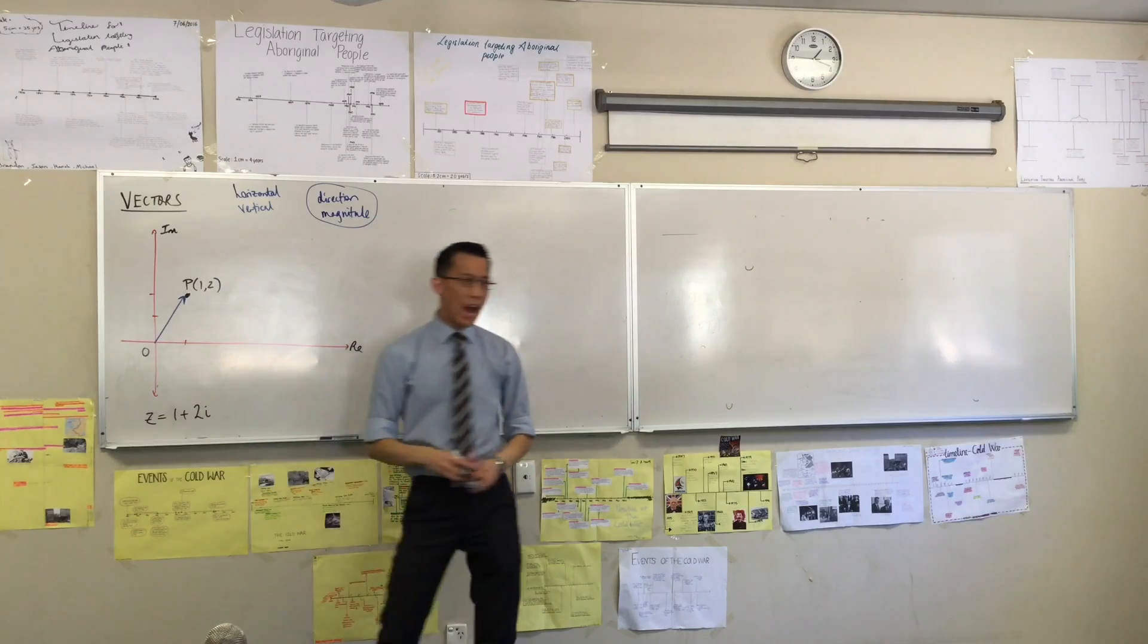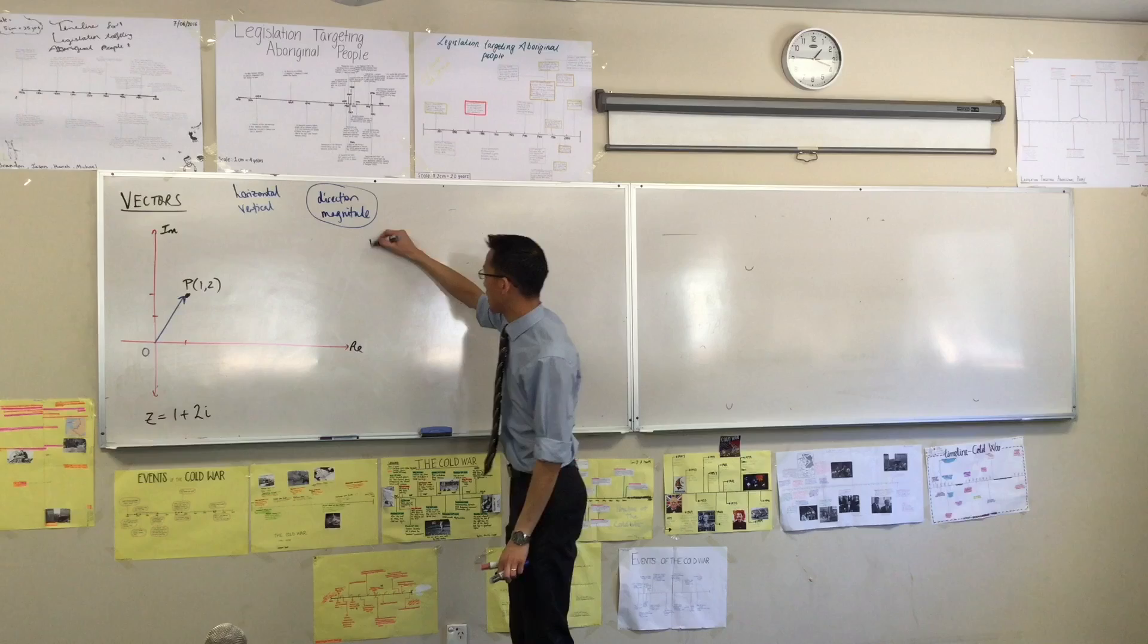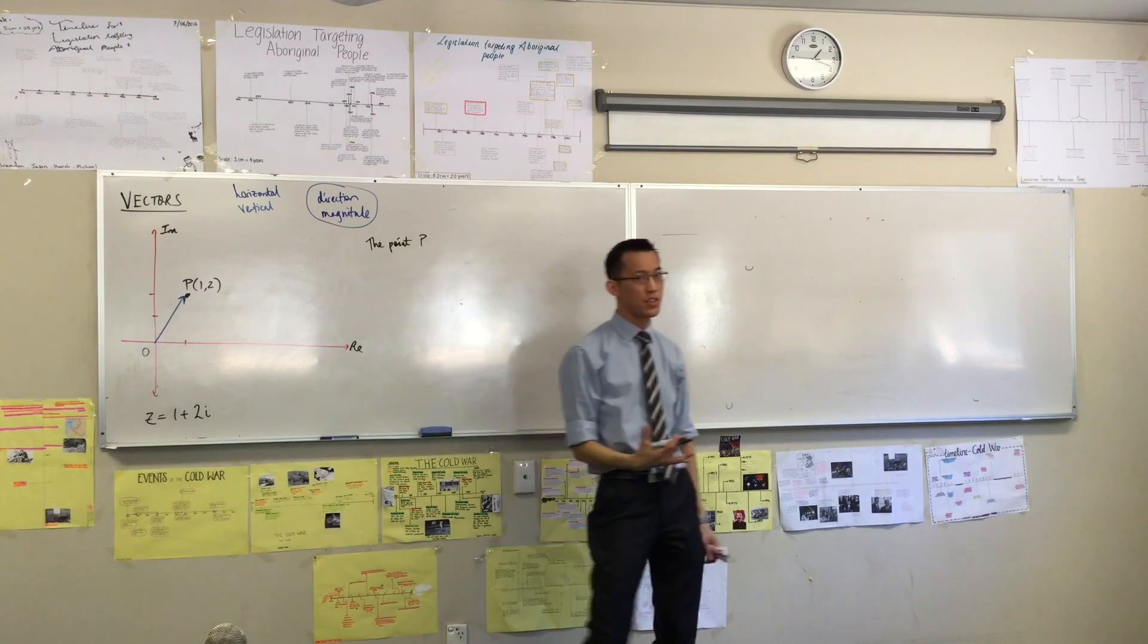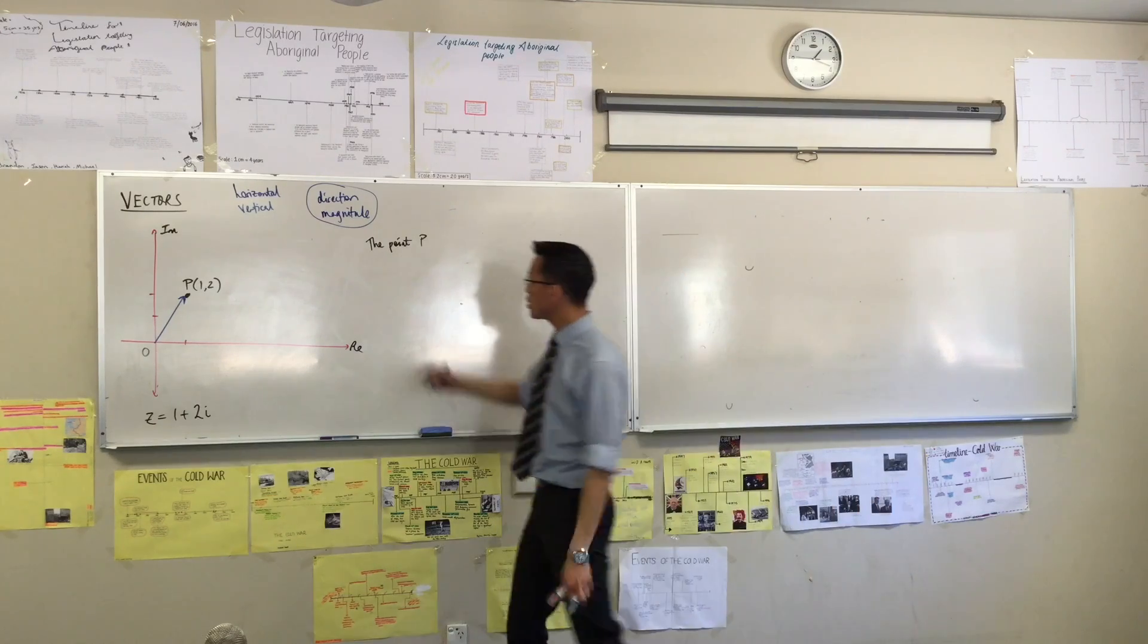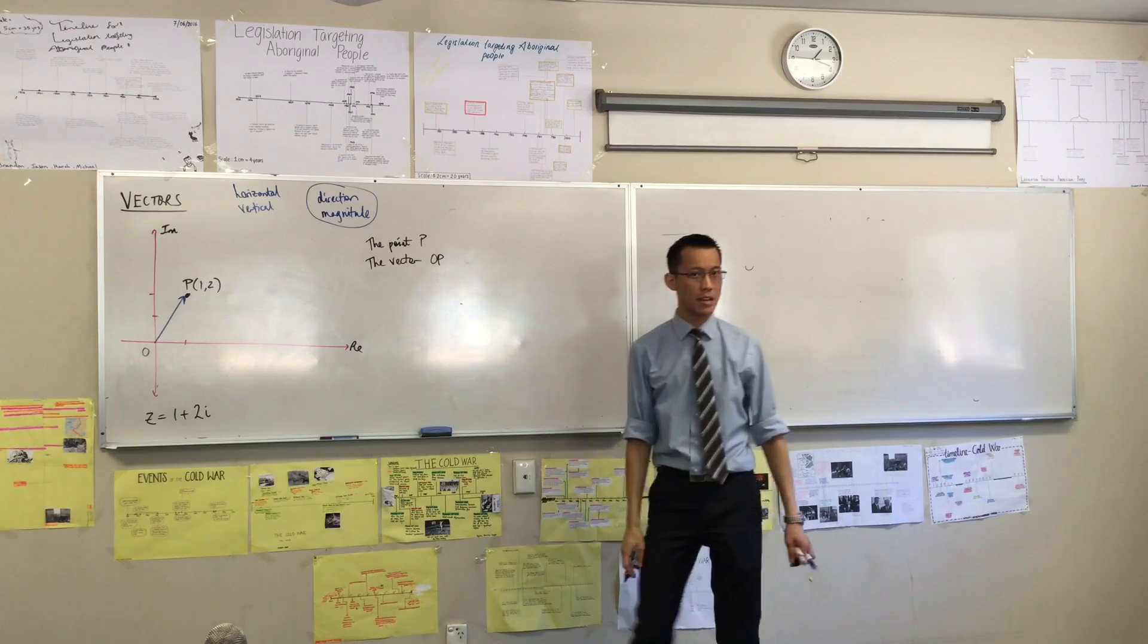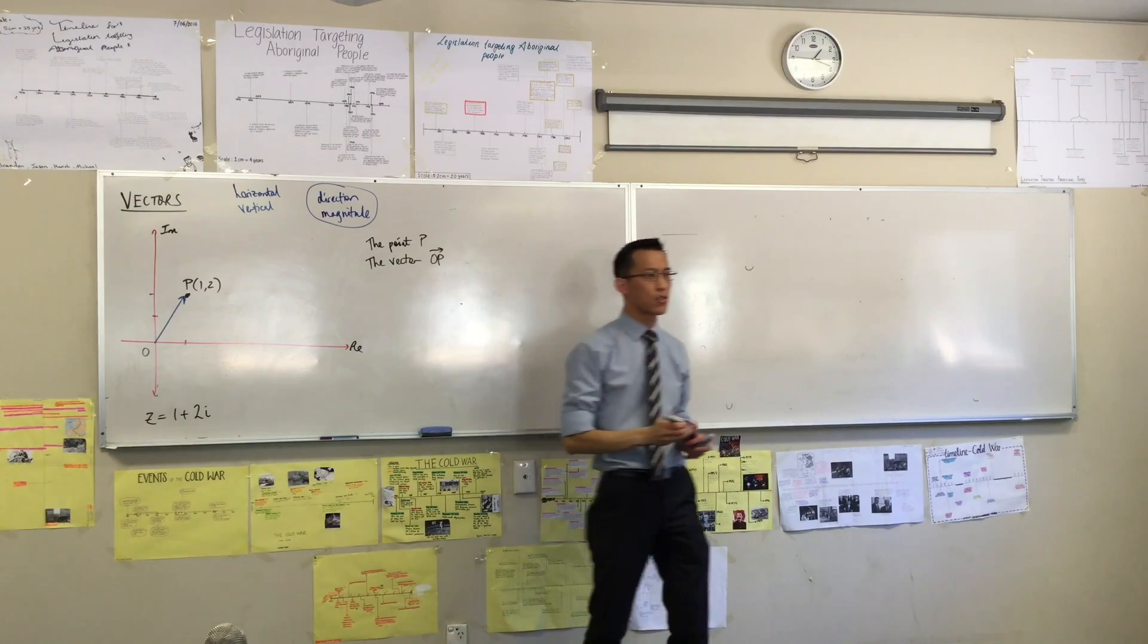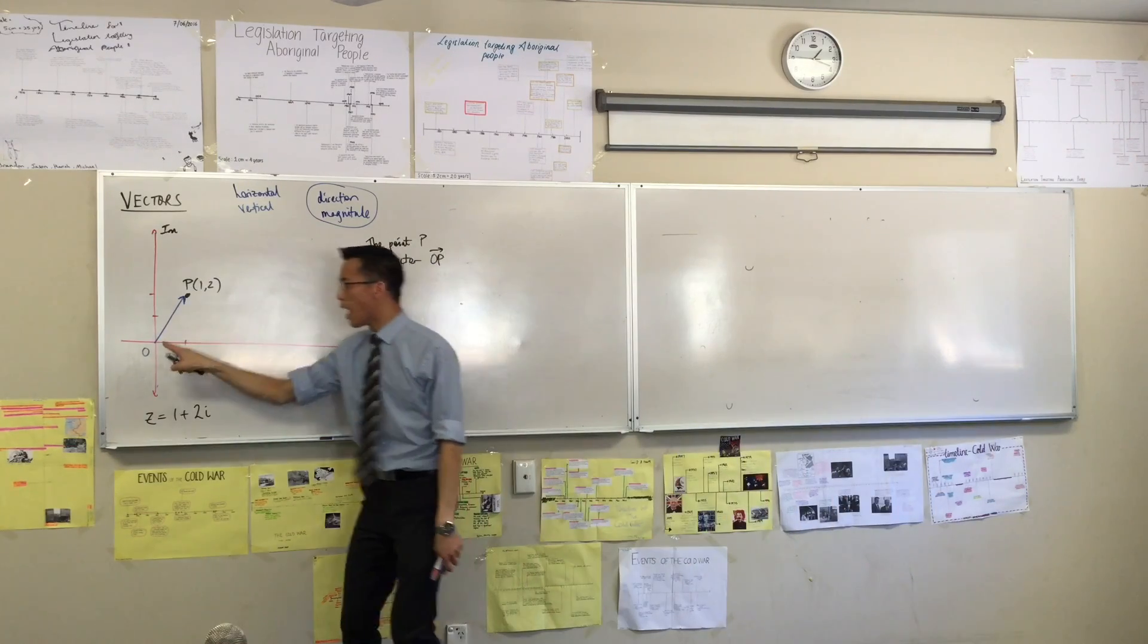So now I've got some extra coordinates here. I can say P, the point P, that's one of my representations for 1 plus 2i. But I can also say the vector OP. And importantly, you'll notice the direction matters. So it's O up to P, not P down to O.